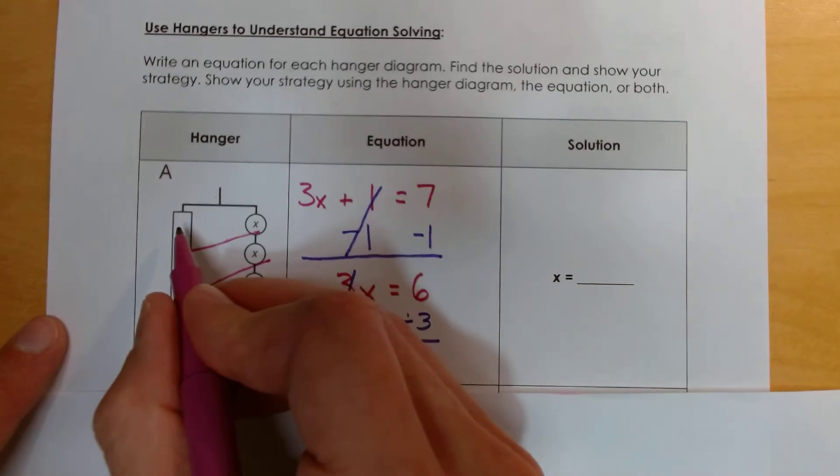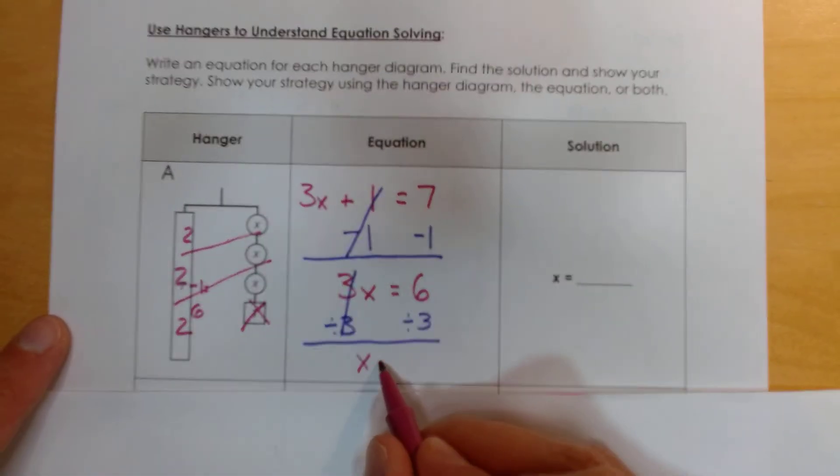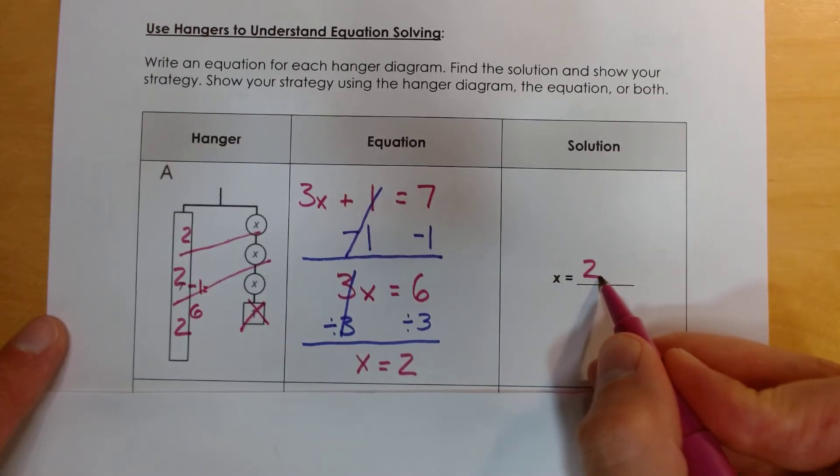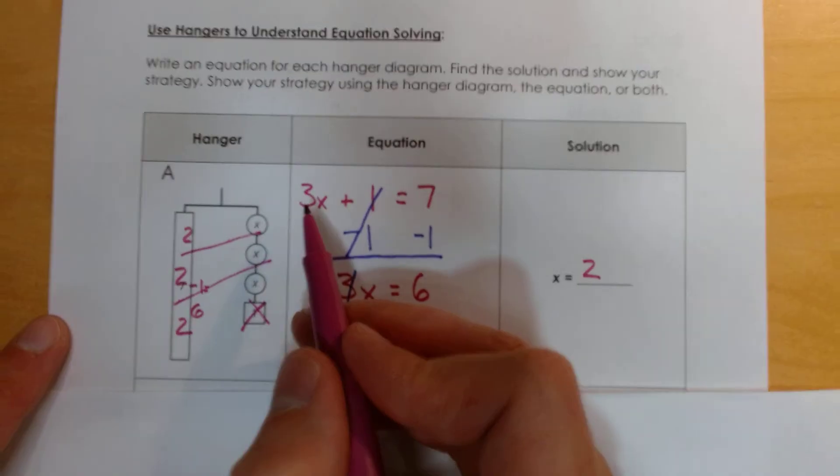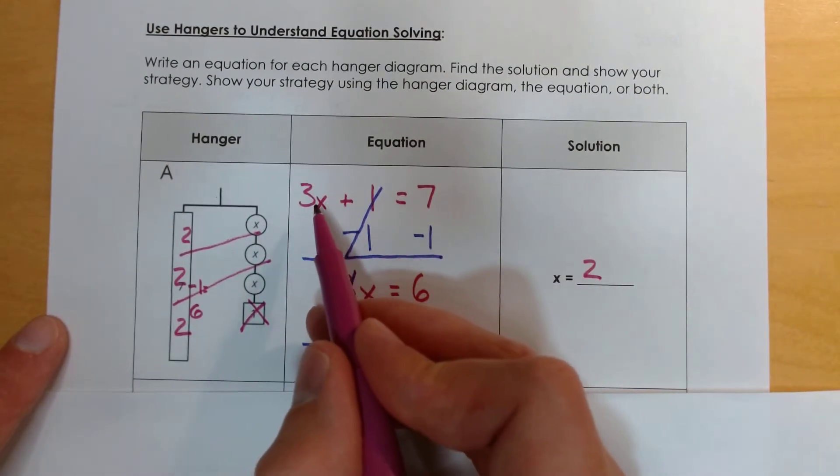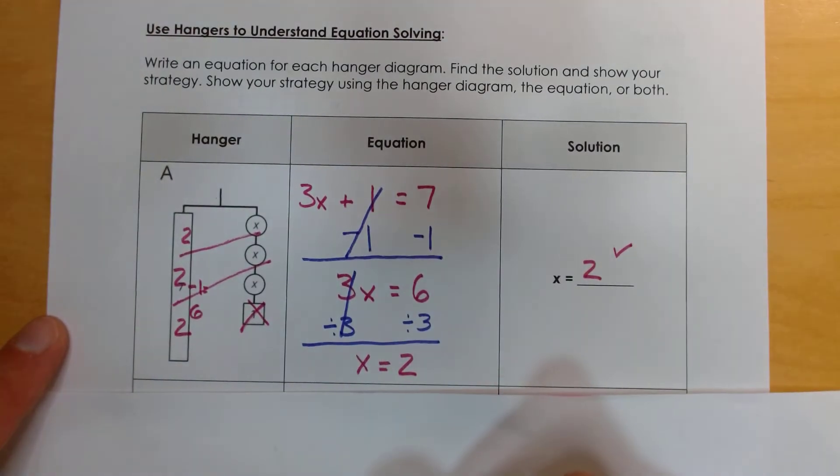6 divided by 3 would be 2. So each group over here would be 2. And we would say our solution is x equals 2. And we can check ourselves by taking our solution and putting it back into our equation. So 3 times 2 is 6 plus 1 equals 7. So that's how we know we are correct.